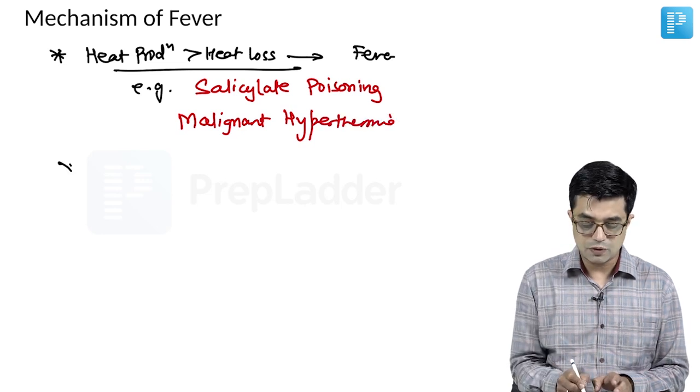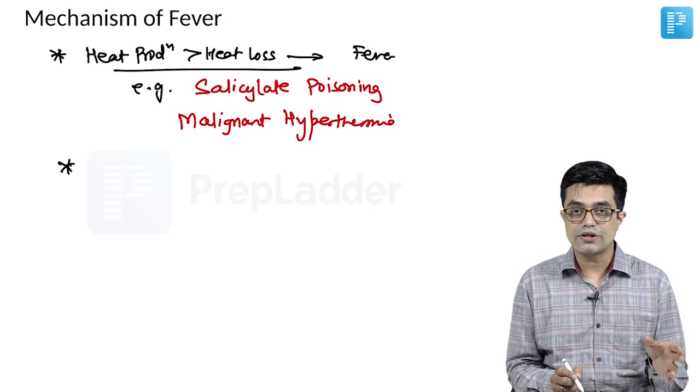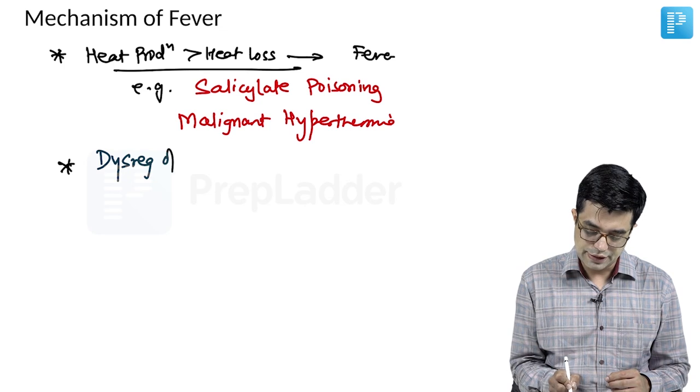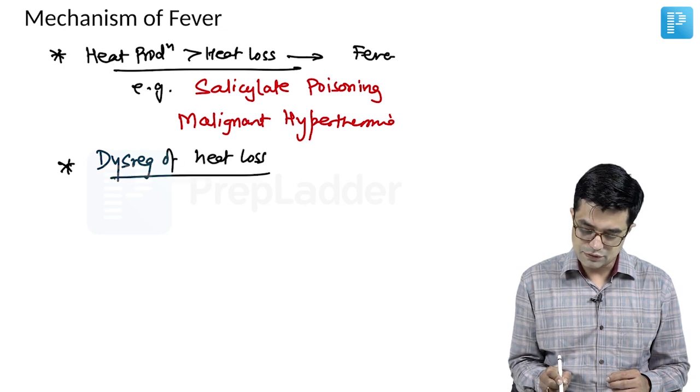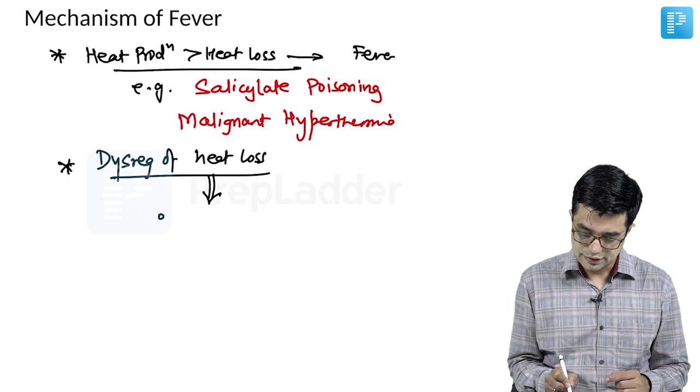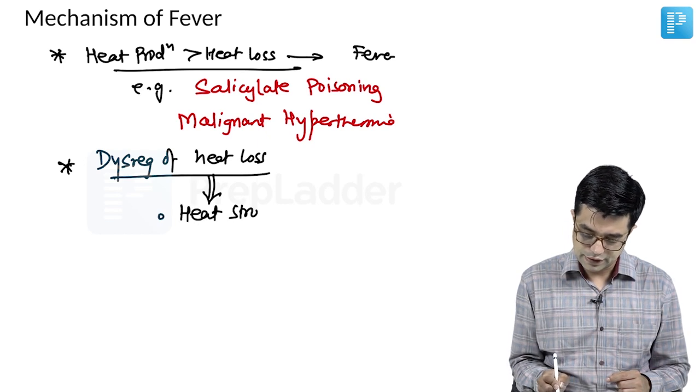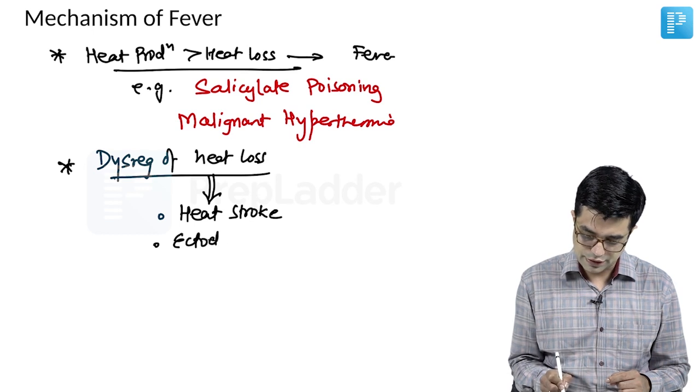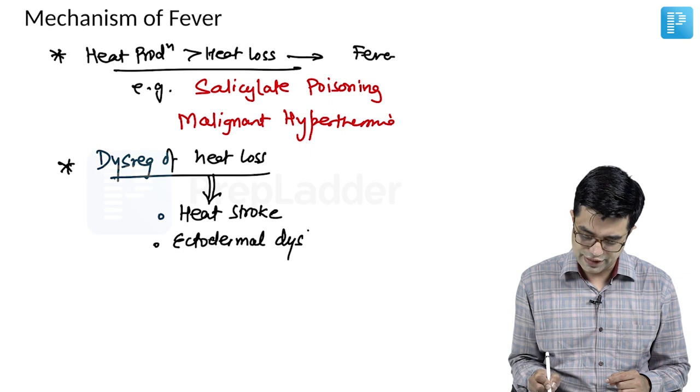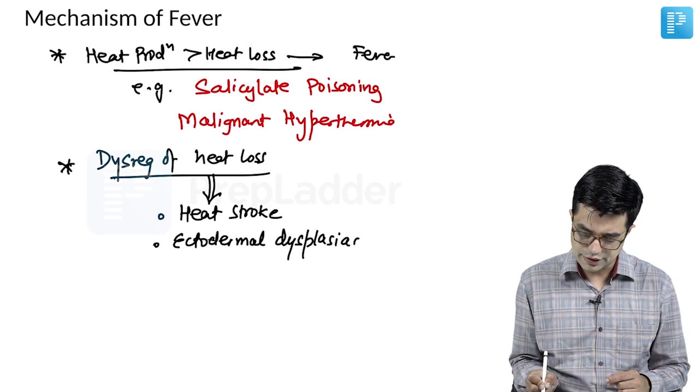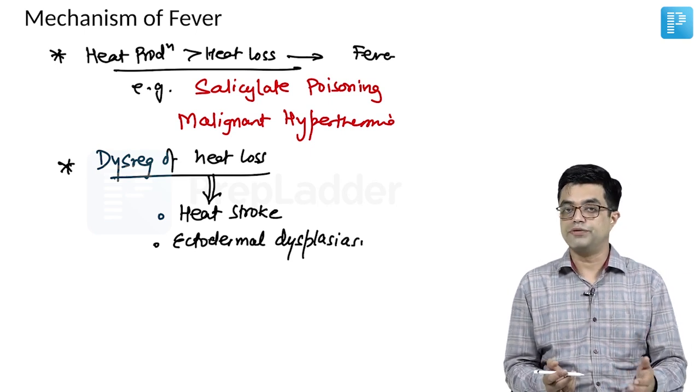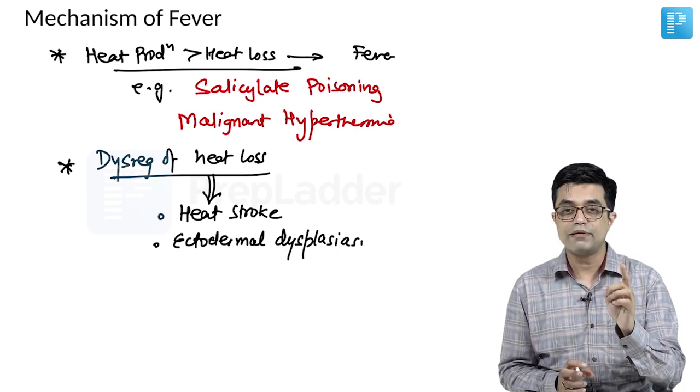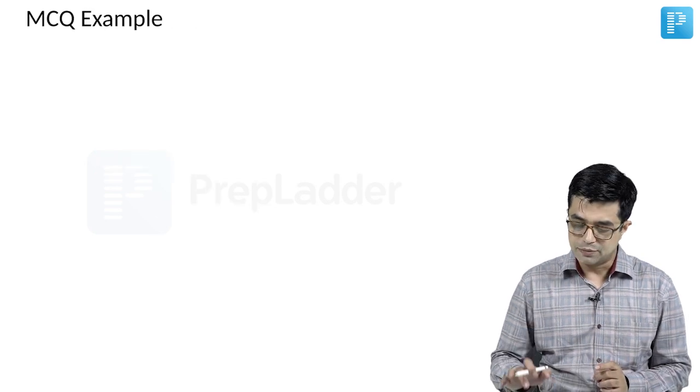Then the third mechanism, what we had talked about was, no excess heat production, just that the normal heat loss mechanism is dysregulated. So, dysregulation of the heat loss mechanisms. This will happen in heat stroke and also has been reported in some forms of ectodermal dysplasias. So, various types of cutaneous conditions, dysregulation of heat loss has been described to lead to fever. So, these are the important three mechanisms. The types of pyrogens can be asked in your entrance exam.